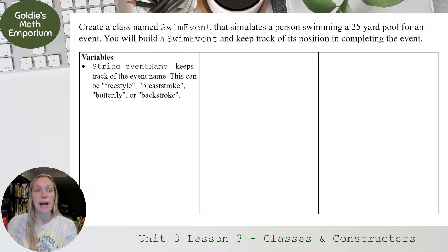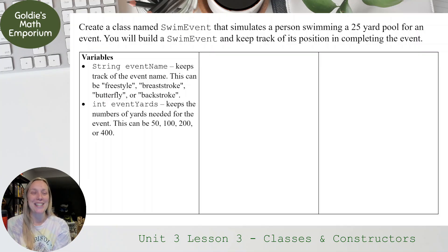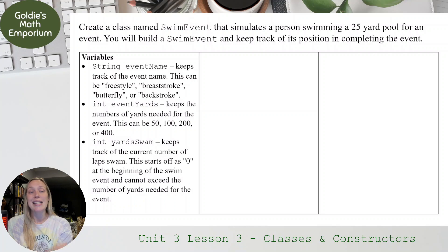So you're going to create a class called SwimEvent. The variables that you're going to have, you're going to have a string called eventName that keeps track of what the event name can be - freestyle, breaststroke, butterfly, backstroke - all of these things in a swimming competition. You're going to keep track of eventYards. So this is the number of yards needed for the event - the 50-yard freestyle, the 100-yard breaststroke, 200 or 400 as well. And then yardsSwim. So this keeps track of the current number of laps that you have swam. So it starts off as zero and cannot exceed the number of yards needed for that event.